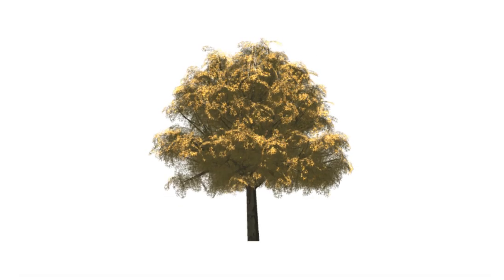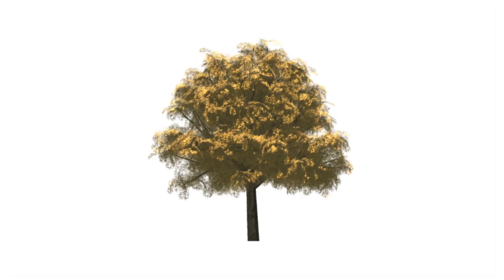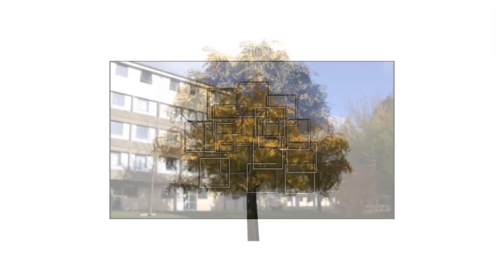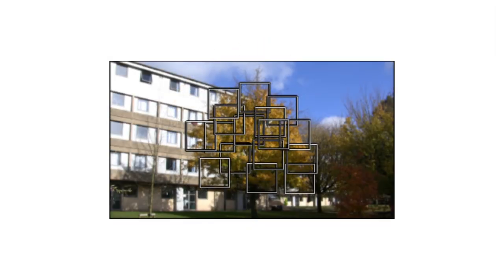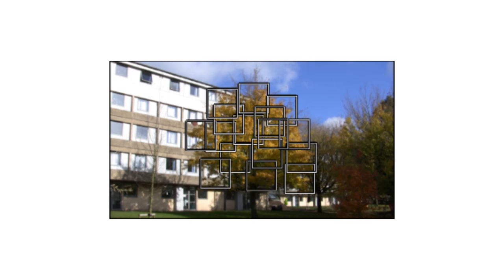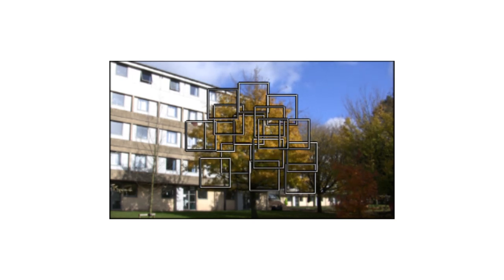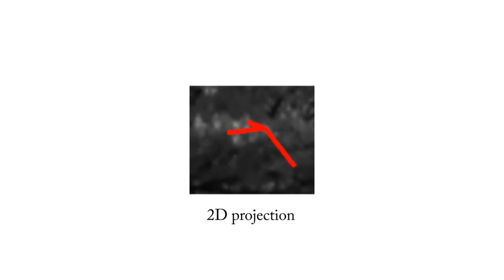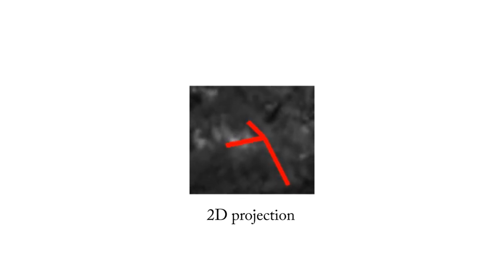Next, we add motion to the model. We reconstruct motion in 3D by tracking the tree moving in the source video. The basic idea is that the 3D tree should always project onto its moving 2D skeleton.